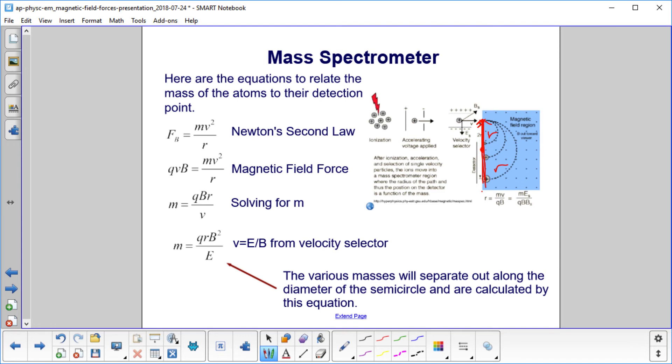So let's start with Newton's second law. And since we have a centripetal force, it's equal to mv squared over r. We know the magnetic field force is qvb. And this is the same magnetic field that was in the velocity selector. So qvb is mv squared over r.